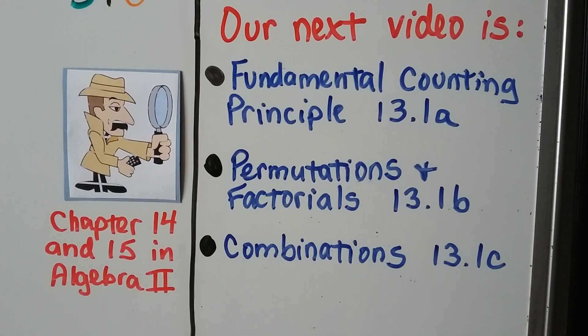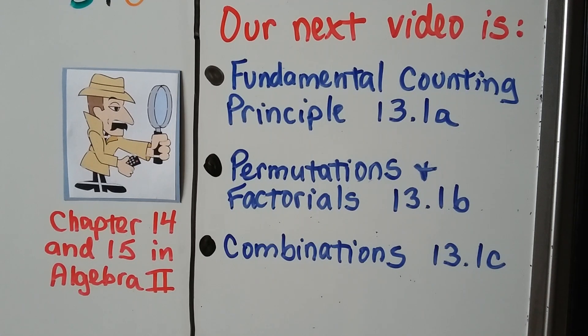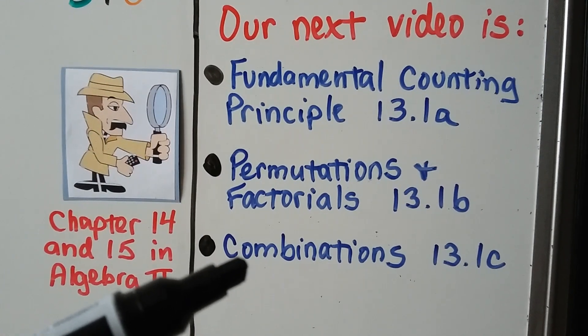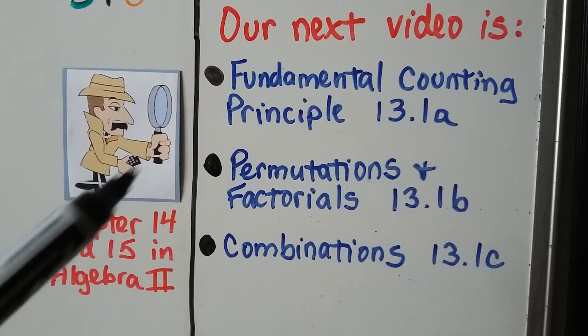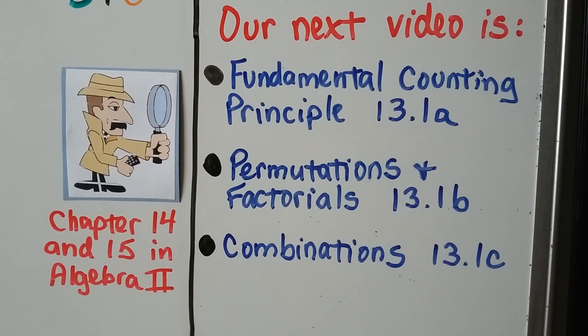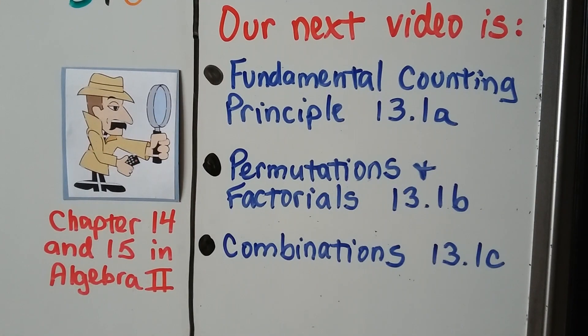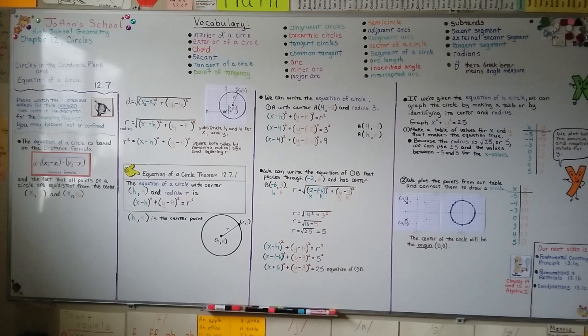We're finished with chapter 12, and we're going to move on to chapter 13, and we're going to talk statistics in that chapter. So our next video is going to be 13.1a, the fundamental counting principle. It's going to be followed by 13.1b and 13.1c. We're going to talk about permutations and factorials. That is an exclamation point in your math. We're going to talk about combinations. Now, for those of you who want to move ahead and want to go faster than how I'm releasing them daily, you could go to the description and see the links for chapter 14 and 15 in Algebra 2 that actually taught this. Algebra, geometry, trigonometry, and calculus, they're all linked together. So you can go to the Algebra 2 playlist or to those chapter playlists and watch those if you want to go a little quicker. I hope you're doing well, and I'll see you next time. Bye.